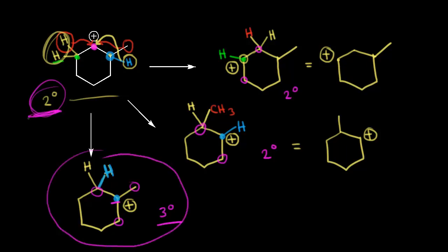So this is the rearrangement that we would see — going from a secondary carbocation to a tertiary carbocation via a hydride shift. Just like the previous examples, we don't need to draw in the hydrogens; we could just show our tertiary carbocation leaving out the hydrogens, with a methyl group and a plus one formal charge on this carbon. This tertiary carbocation is more stable than the secondary ones.